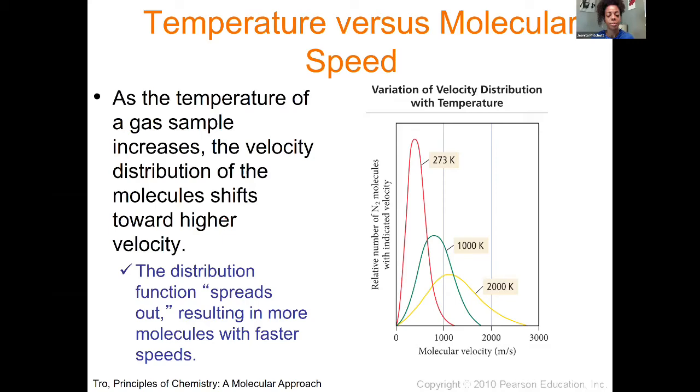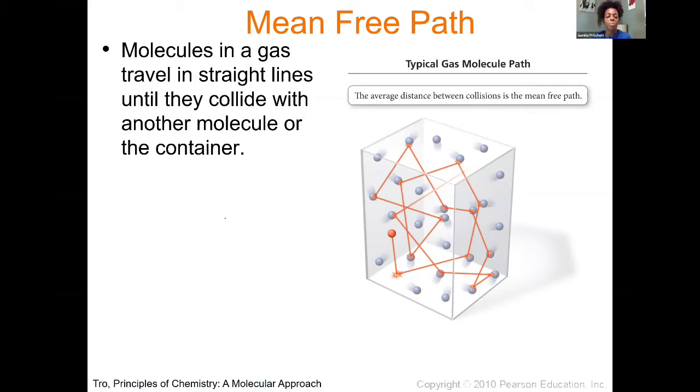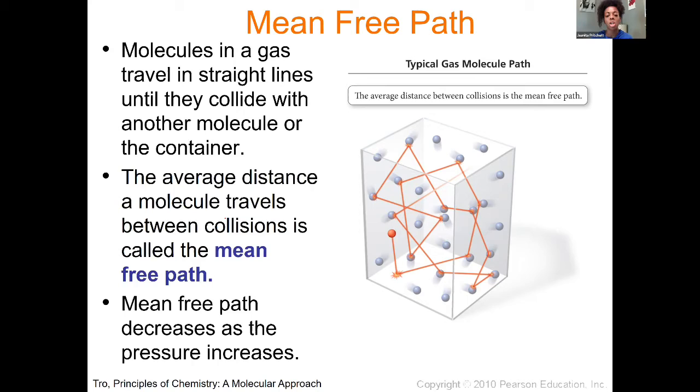One of the other things we'll talk about here is this idea of the mean free path. Molecules in a gas travel in straight lines until they collide with something else that's going to change the direction of it. You can see in the picture here where these gas molecules are bouncing around, they're able to strike a surface and that changes the trajectory in which it's traveling. The average distance a molecule travels between collisions is called the mean free path. The mean free path decreases as the pressure is increased in a vessel.